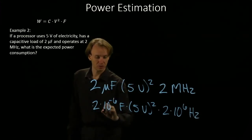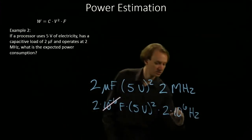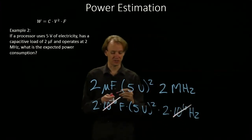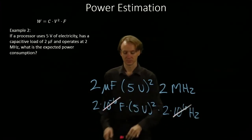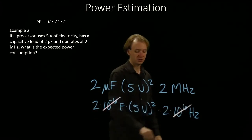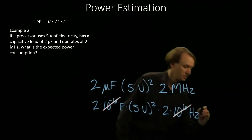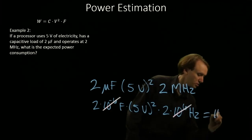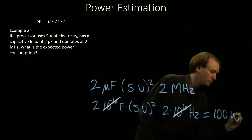As before, the 10 to the 6th and the 10 to the minus 6th will cancel out, leaving us with 2 times 25 times 2 equals 100 watts.